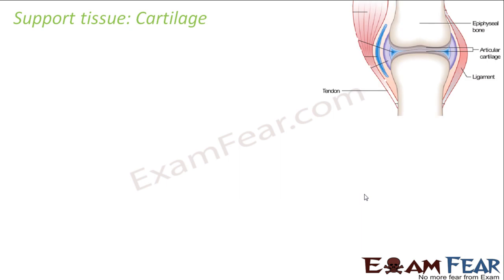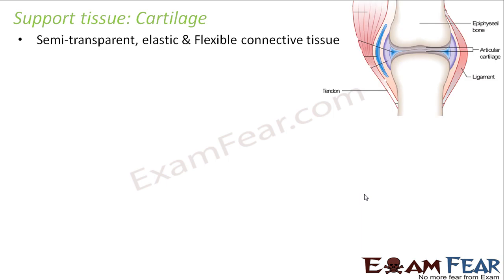Now let us talk about the next support tissue, which is cartilage. Cartilage is a semi-transparent, elastic, and flexible connective tissue. Flexibility was something that was missing in bone because of the very dense extracellular matrix. But cartilage is flexible, elastic, and semi-transparent.